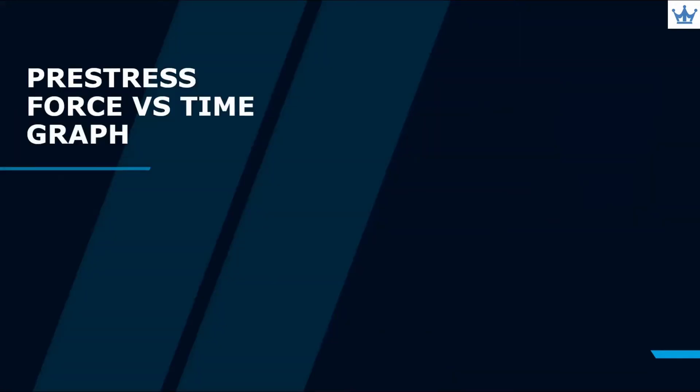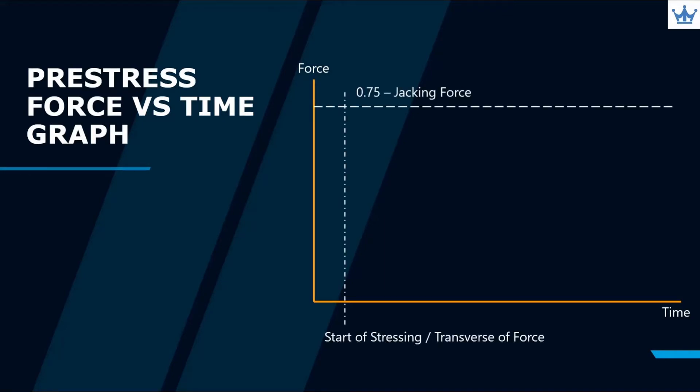To understand Pre-stress Losses further, please refer to the Force vs. Time Graph for a simple explanation. To start, we will stress the tendon up to 75% UTS.